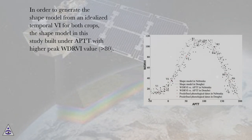In order to generate the shape model from an idealized temporal VI for both crops, the shape model in this study built under APTT with higher peak WDRVI value, greater than 80.